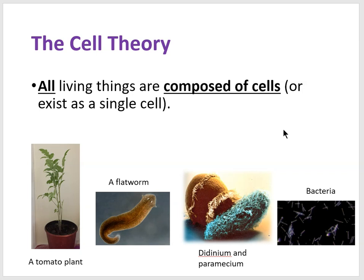Living things were composed of cells, so plants and animals were multicellular. But in addition, on planet Earth there are single-celled organisms like didinium and paramecium, and very tiny organisms called bacteria.